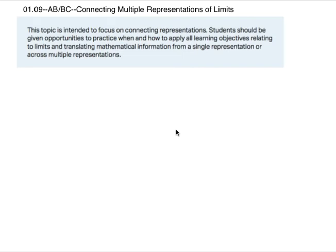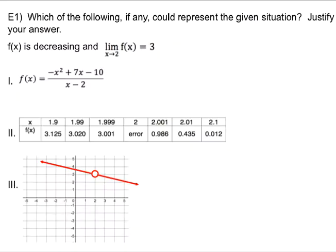Okay, this is AP AB and BC. We're doing Unit 1, Section 9. So basically, this is a quick review of the stuff that we've covered in talking about connecting multiple representations of limits. We're just going to bust out two problems to make sure that we can kind of make the connections.